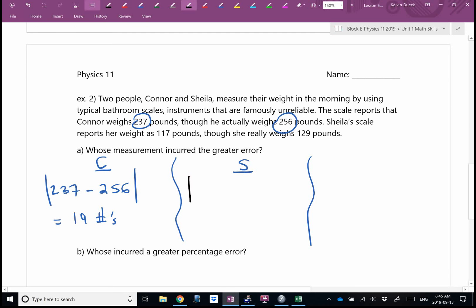Sheila. Well, the measured value is 117. The actual value is 129. I'll take the absolute value of that. Double check me, but I think it's 12. Yes. So whose scale had a larger error? Whose scale was off by more in pounds? Connor had larger error. Does that mean that Connor's scale is less accurate? Well, the problem is we really can't make a comparison of these two numbers because the original masses were also so different. The best way to compare them would be to convert both of these into percentages.